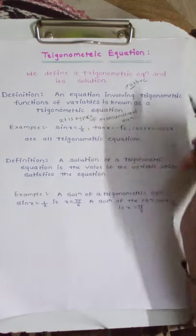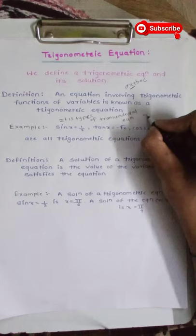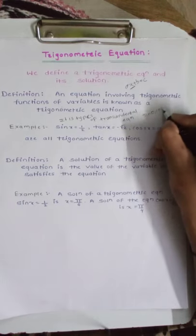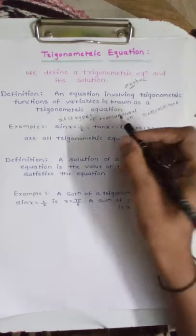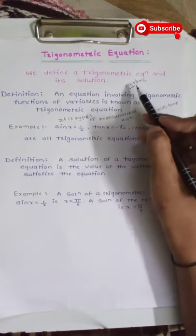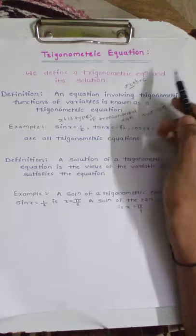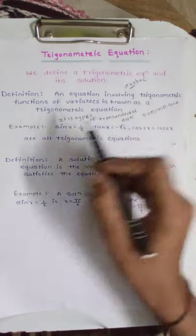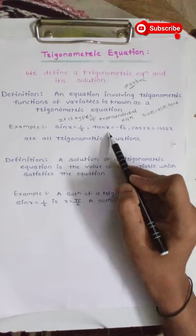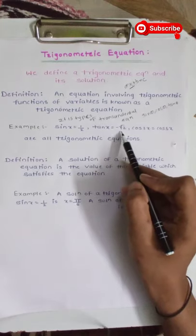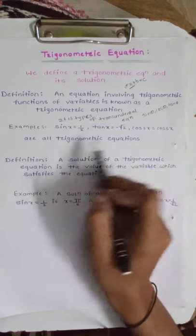This equation involves only trigonometric functions such as sin theta, cos theta, tan theta, other than algebraic functions. The algebraic functions use constants like a and b. For example, sin x is equal to 1 by 2, tan x is equal to minus root 2, and cos 3x is equal to cos 5x are all trigonometric equations.